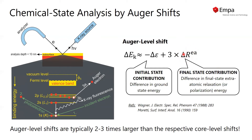This implies that the Auger shifts are about two to three times larger than the respective core level shifts, which is also confirmed by experiment. The much larger contribution from the relaxation energy